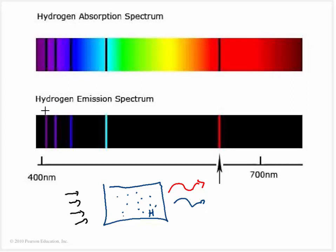What really happens is hydrogen is going to put off some violets, some indigos, some blues, some light blues, some cyans, and some reds - but only these colors. So only certain wavelengths would be emitted by this excited hydrogen gas.